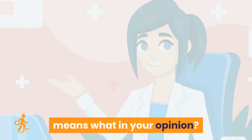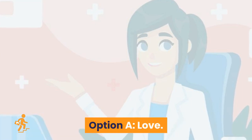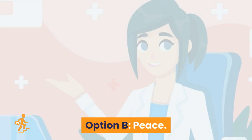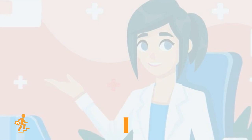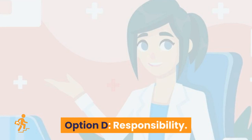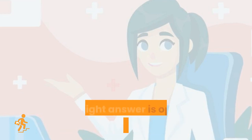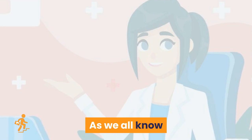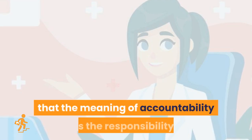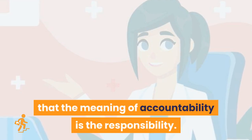Question 17. The word accountability means what in your opinion? Option A: Love. Option B: Peace. Option C: Care. Option D: Responsibility. The right answer is Option D: Responsibility. The meaning of accountability is responsibility.